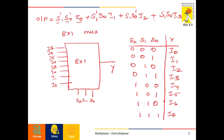The next one is the 8x1 multiplexer, which has 8 inputs and a single output. The inputs are I7, I6, I5, I4, I3, I2, I1, and I0. Since it is an 8x1 multiplexer, using the formula 2 power N = 2 power 3, we have three selection lines: S2, S1, and S0.